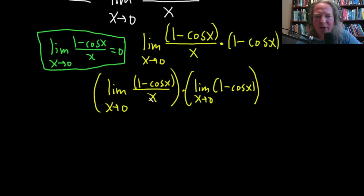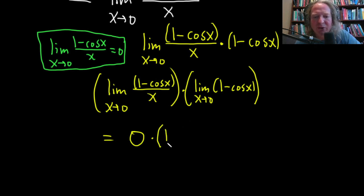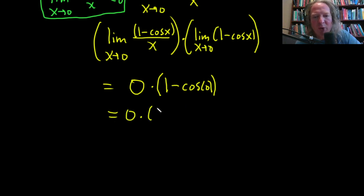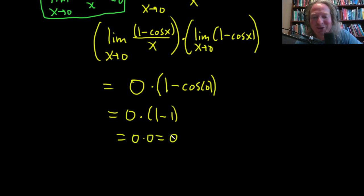The first limit, via the formula, equals 0. For the second limit, we can just plug in 0 directly — it's 1 minus cosine of 0. Cosine of 0 is 1, so that's 1 minus 1, which is 0. So this is 0 times 0, which equals 0.